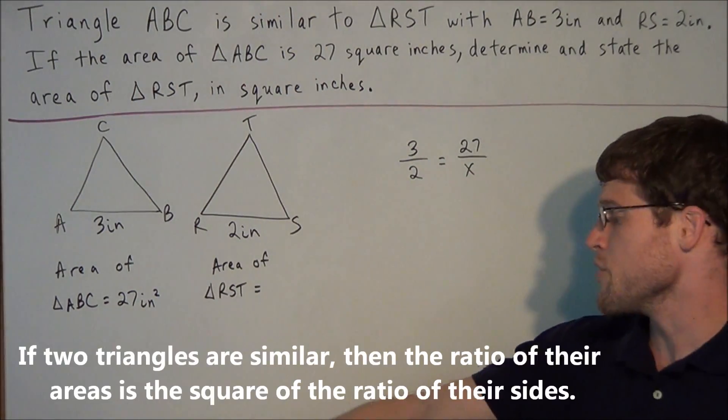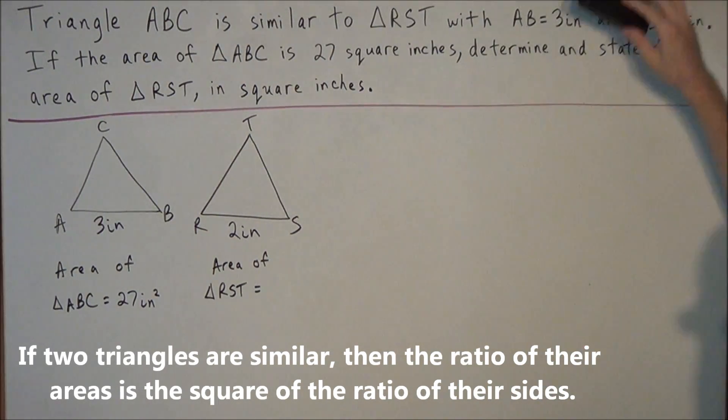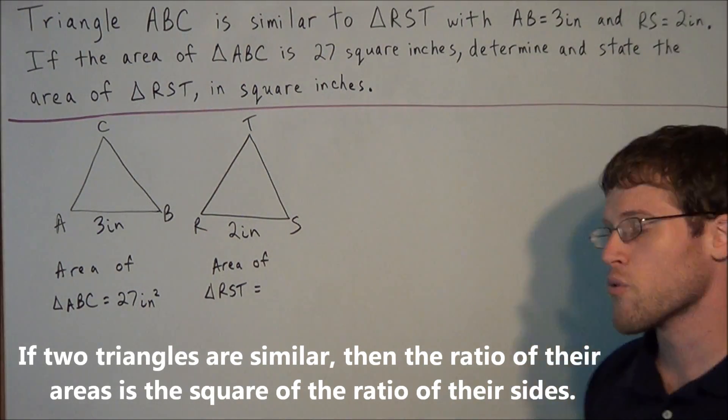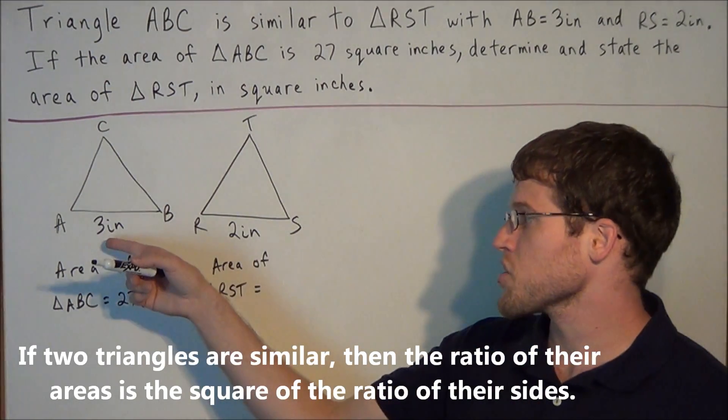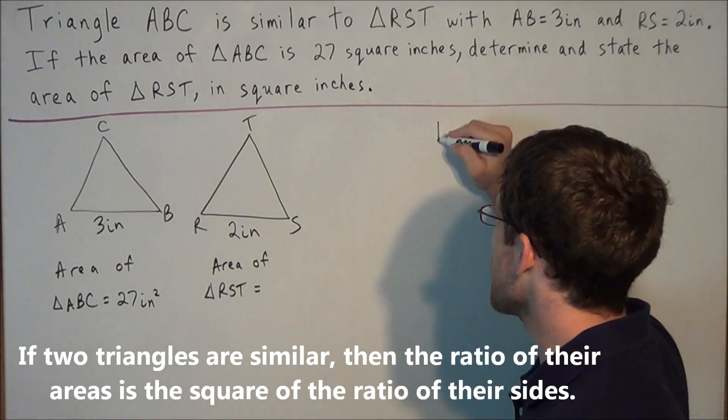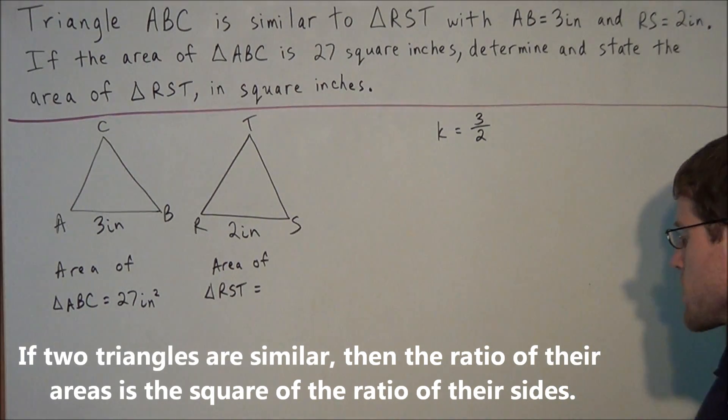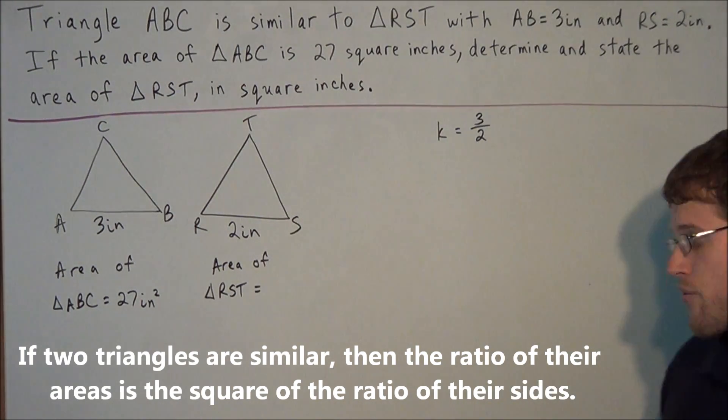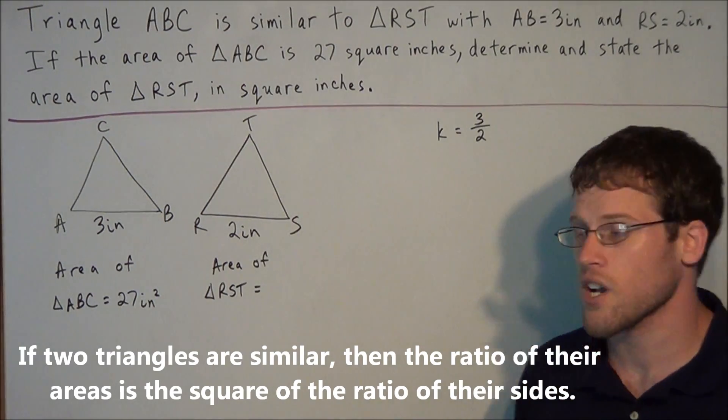If two triangles are similar, then the ratio of their areas is the square of the ratio of their sides. So our first instinct to set up the ratio of 3 over 2 is correct, but we do need to find the square of this ratio. This represents the ratio of their sides, so from the theorem we need to square the ratio of their sides.